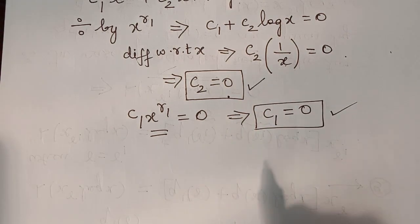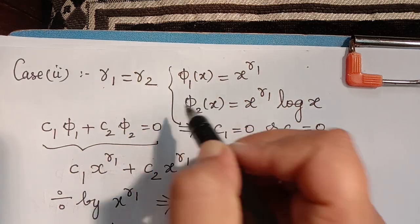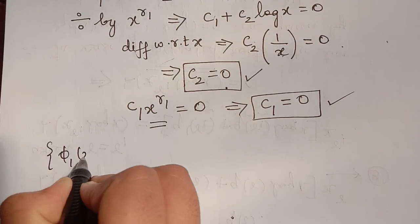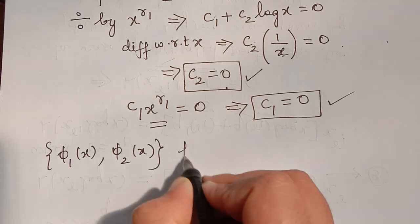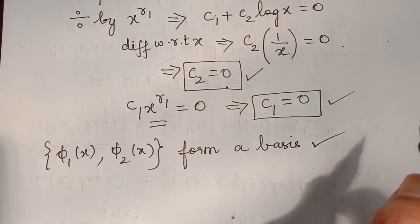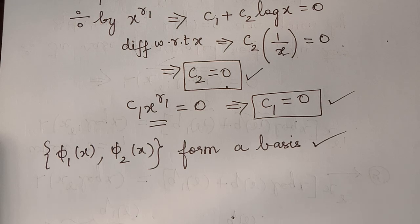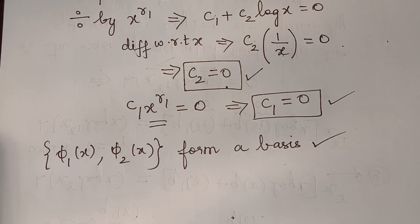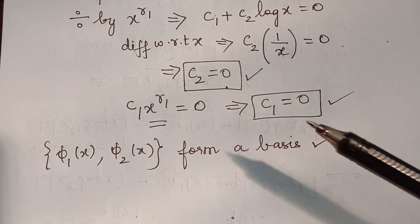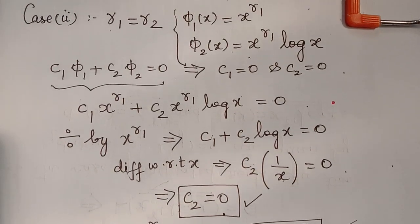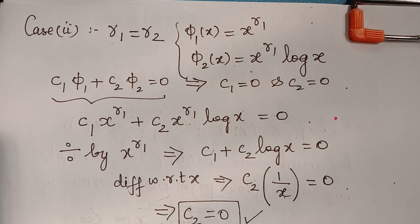We started with c₁φ₁ + c₂φ₂ = 0 and obtained c₁ = 0 and c₂ = 0, which proves that φ₁ and φ₂ are linearly independent. Hence, the solutions φ₁(x) and φ₂(x) form a basis for the solutions of the Euler equation. Note: if the Euler equation is asked for 15 marks, it is necessary to prove that these solutions form a basis in addition to finding them. Thank you.